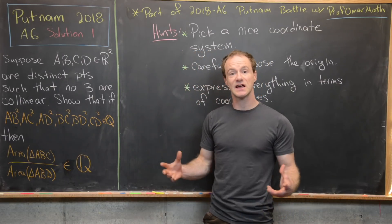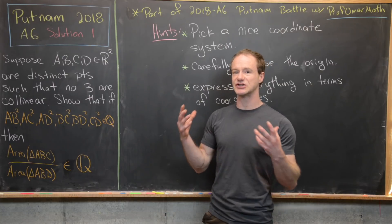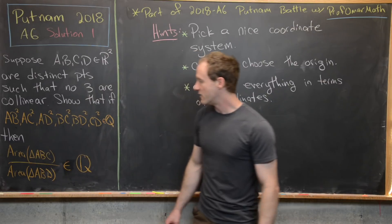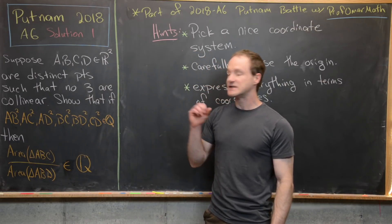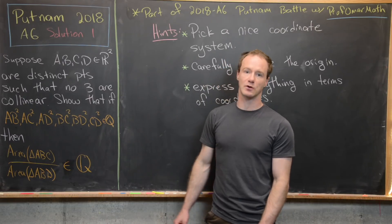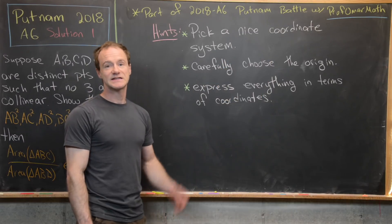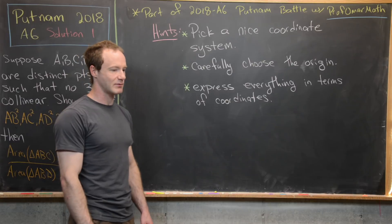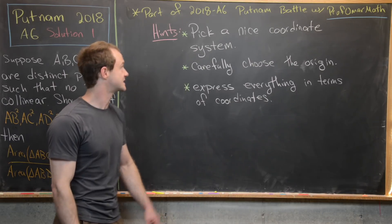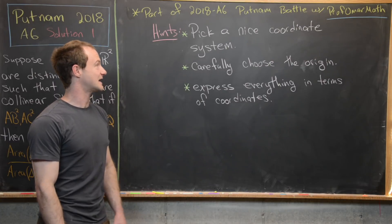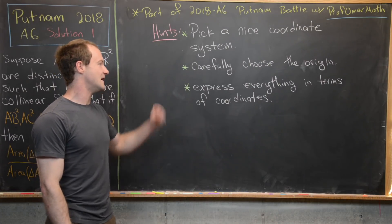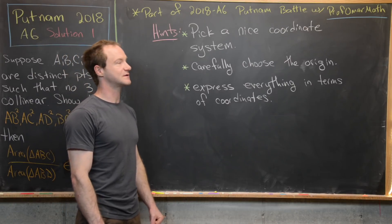Notice that's not those distances, it's the square of those distances. Then the area of triangle ABC divided by the area of triangle ABD is also a rational number. We're going to use a coordinate system for this problem. The hints are: pick a nice coordinate system, carefully choose the origin, and then express everything in terms of coordinates.